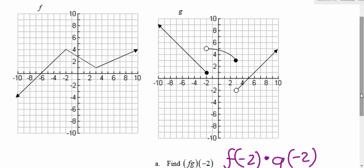So f is the graph that's on the left here. We need negative 2. The value is 4.